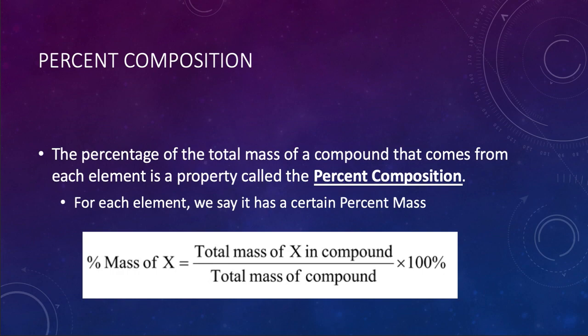For each element of that compound, we can break it down into its particular percent mass. Calculating percent mass is actually a pretty simple thing. All you do is add up the total mass of one of the elements, x being one of the elements in the compound, then you divide by the total mass of the compound and multiply by 100. Very simple.